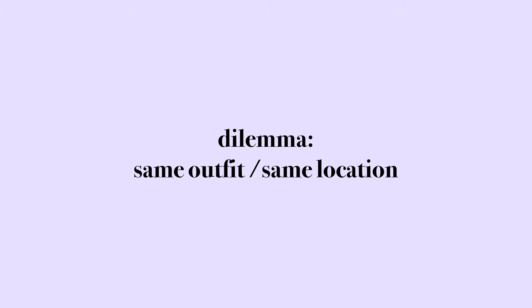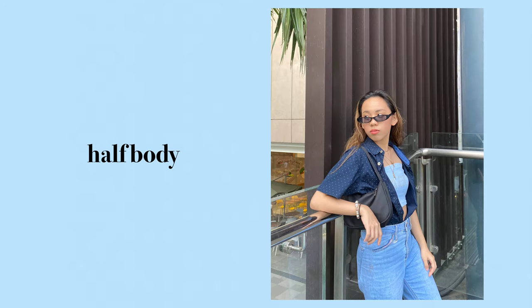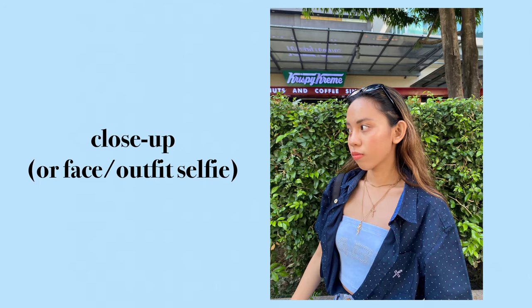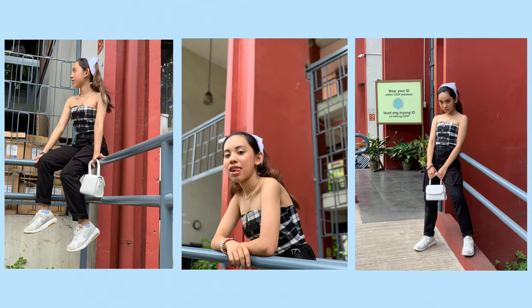Another dilemma you might face: what if you want to upload pictures but in all of those pictures you're wearing the same outfit or they were taken in the same location? To remedy that, starting when you shoot those pictures, I would advise you to strive to have at least these three types of shots: number one, the whole or full body shot; number two, half body shot; and number three, a close-up, selfie shot, or outfit shot. Another option is to try out different body positions or poses to achieve an eye-pleasing balance.